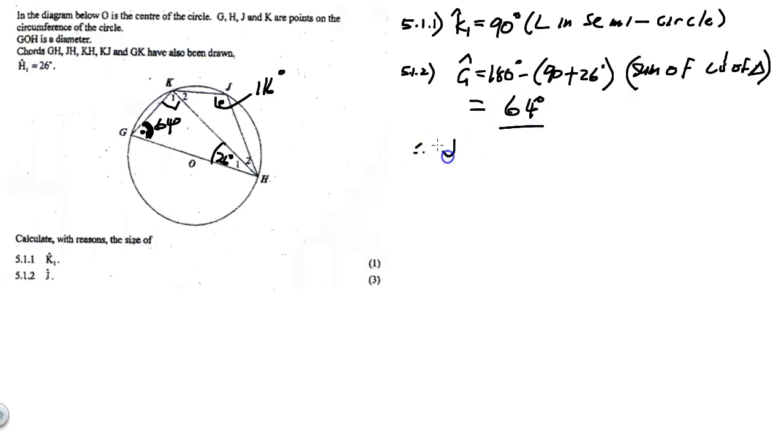Therefore, J equals 180 minus 64 degrees. Opposite angles cyclic quad supplementary equals 160 degrees.